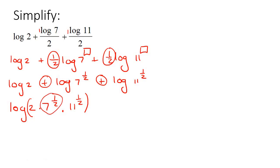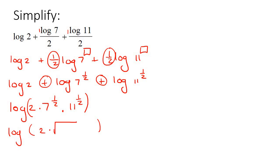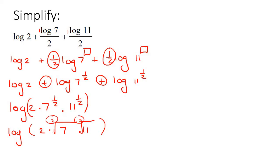These are all plused together, so they become multiplied: log(2 × 7^(1/2) × 11^(1/2)). Your teacher might ask you to rewrite this in square root form: log(2 × √7 × √11). They might even combine it further since both roots have the same outside power: 7 × 11 = 77, giving log(2√77).